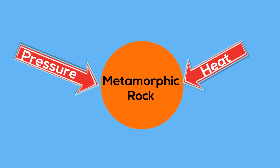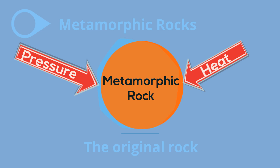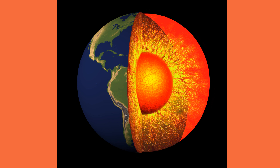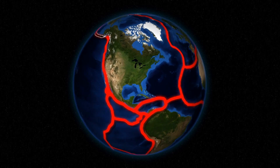Sedimentary, igneous, and even metamorphic rocks can all become metamorphic rocks when exposed to heat and pressure. The original rock is the protolith, but is commonly referred to as the parent rock. Metamorphic rocks can form deep in the earth's crust or at areas of plate tectonic movement.